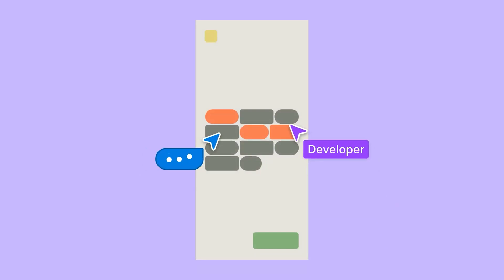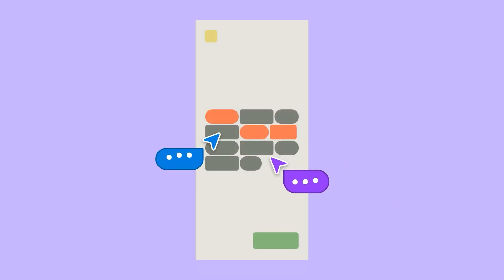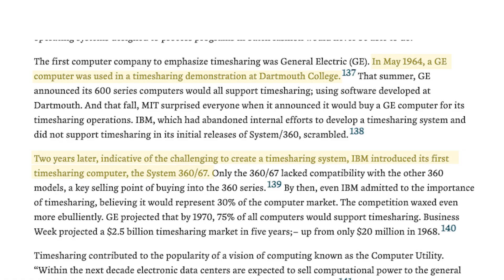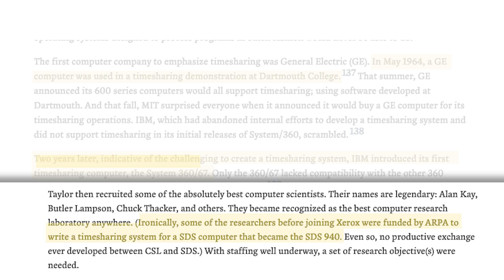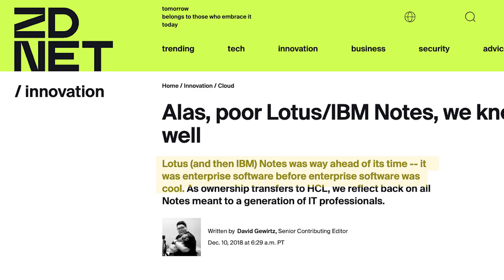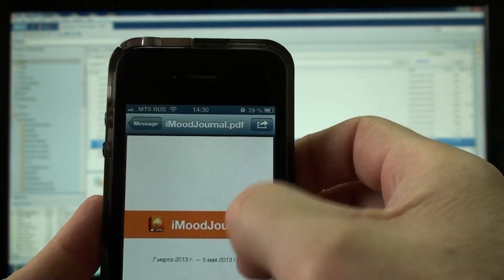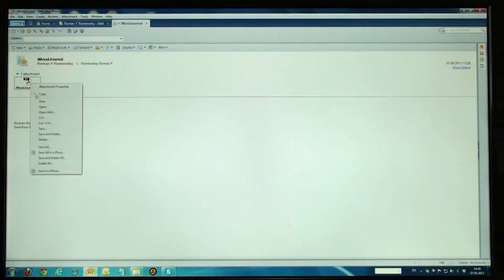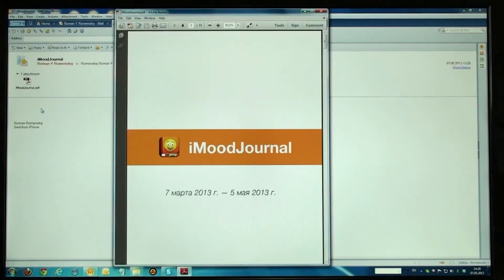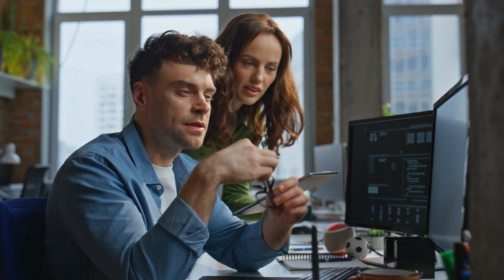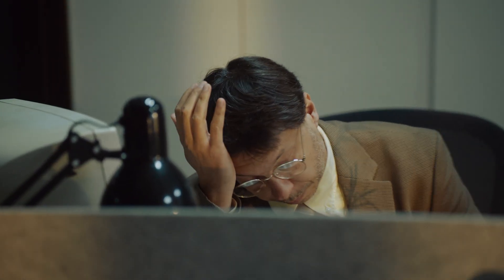But what if multiple people could edit the same document at the same time, no matter where they were? This idea first surfaced in the 1960s and 70s when companies like IBM and Xerox began experimenting with time-sharing systems, allowing multiple users to interact with a mainframe computer. Then in the 1980s, Lotus Notes pioneered early network collaboration, allowing multiple users to work on a shared document within a connected system — storing, accessing, and editing documents in a shared environment. However, despite these advancements, real-time editing remained elusive as users still had to refresh or manually check for updates made by others.